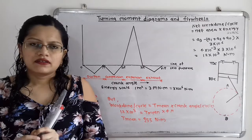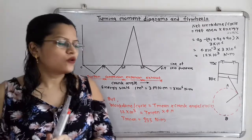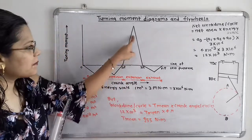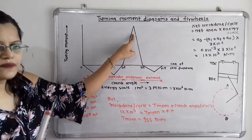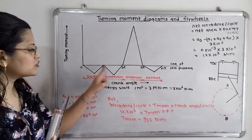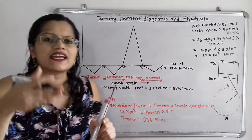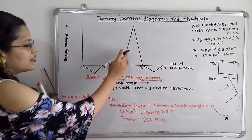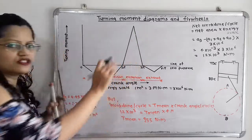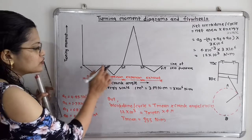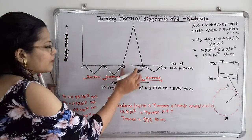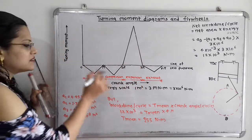Now we need to find the net work done per cycle. The power produced in the expansion stroke is consumed by the suction, compression, and exhaust strokes. So net power equals the power produced in the expansion stroke minus the power consumed in the other three strokes.